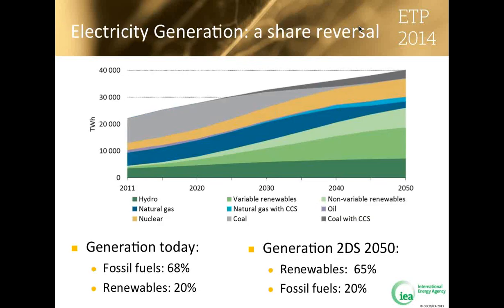When we look at generation shares today, fossil fuels produce nearly 70 percent of electricity, while renewables produce only 20 percent. Under the 2DS scenario in 2050, we see a reversal: renewables produce 65 percent of all electricity and fossil fuels shift down to 20 percent. The greatest growth comes from variable renewable generation such as wind and solar, which alone account for 30 percent of all electricity generation by 2050. As a result, system variability will increase, and new operating paradigms will be required to maintain the same levels of reliability.